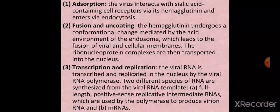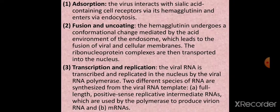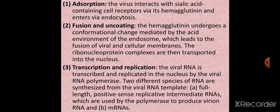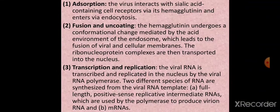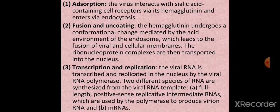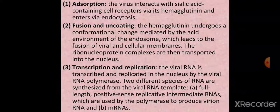Transmission of these virions is mostly by aerosols, droplets, and fomites, and is waterborne among ducks (aquatic birds). In summary, the replication strategy has five steps: first is adsorption, where the virus interacts with sialic acid-containing cell receptors via hemagglutinin and enters via endocytosis. Second is fusion and uncoating, where hemagglutinin undergoes a conformational change mediated by the acidic environment of the endosomes, leading to fusion of viral and cellular membranes.